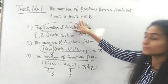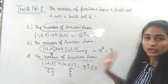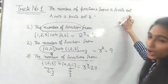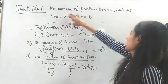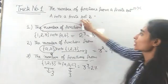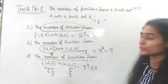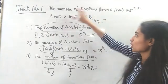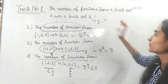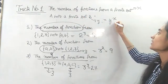The general trick for the number of functions from a finite set A to a finite set B: let the order of set A be X and the order of set B be Y. Then the total number of functions from set A to set B is Y raised to power X.